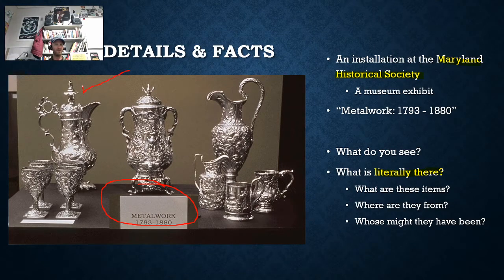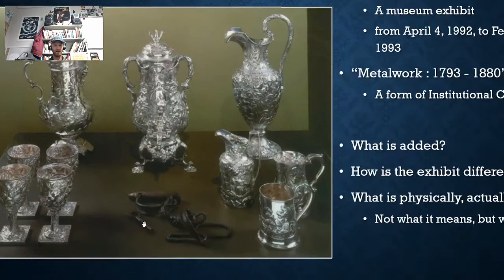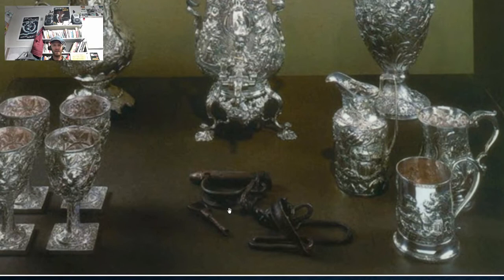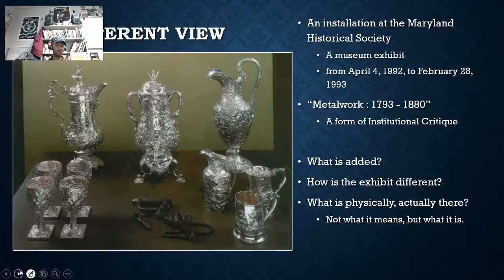Your eye was only drawn to the fancy silver items. But in the actual exhibit — the actual metalwork exhibit — there is a new item here. And it is these manacles, you can call them handcuffs, that were used to bind slaves. The name of the exhibit is Metalwork, 1793 to 1880.